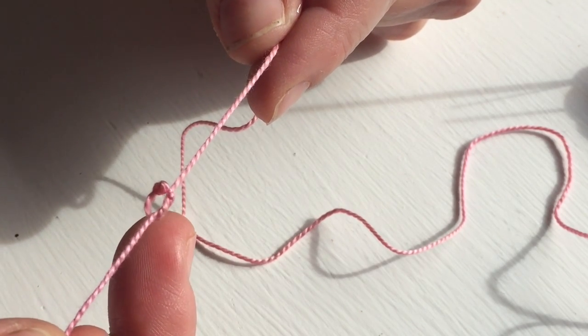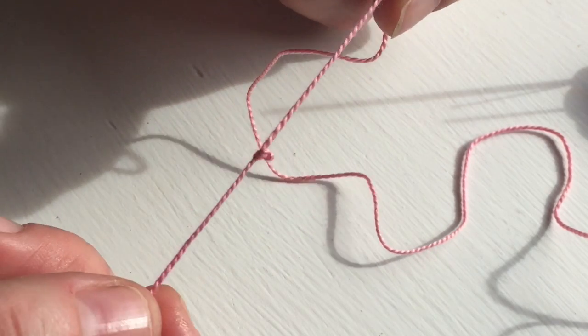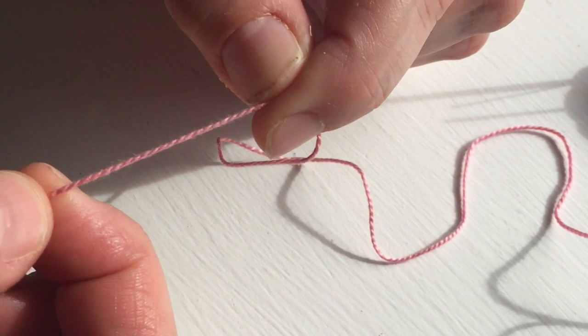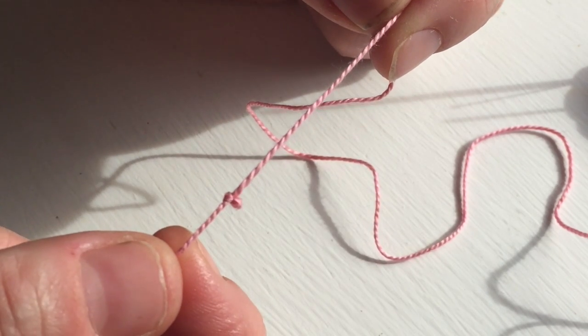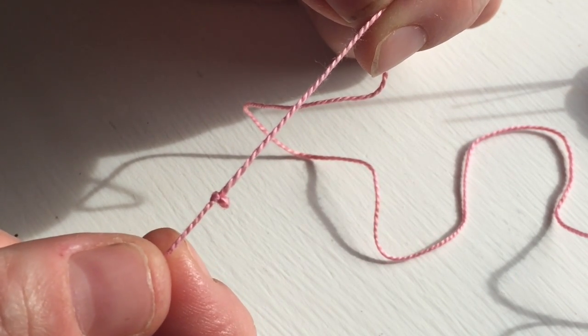I'm just going to guide it and try to get those knots right on top of each other. Now I have two knots sitting on top of each other, and it makes a nice bump which will keep your string from going through your paper. That is how you tie a regular slip knot.